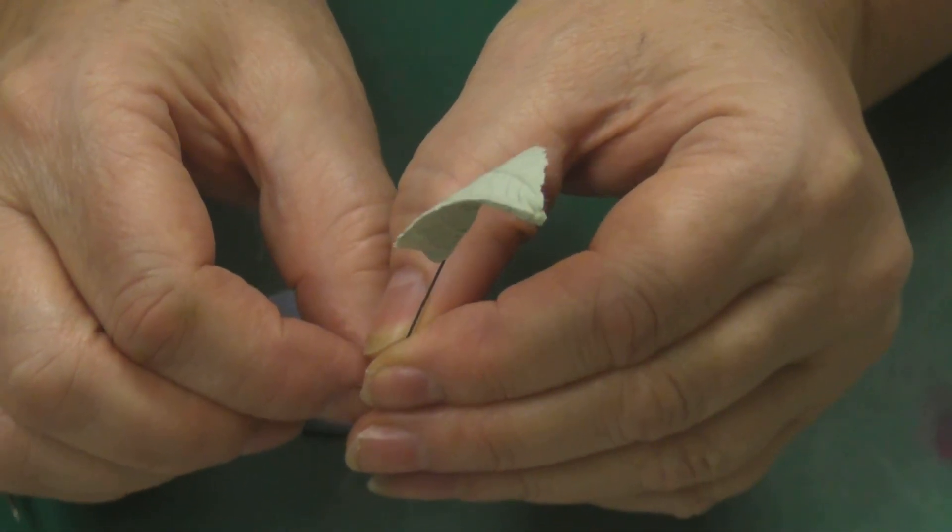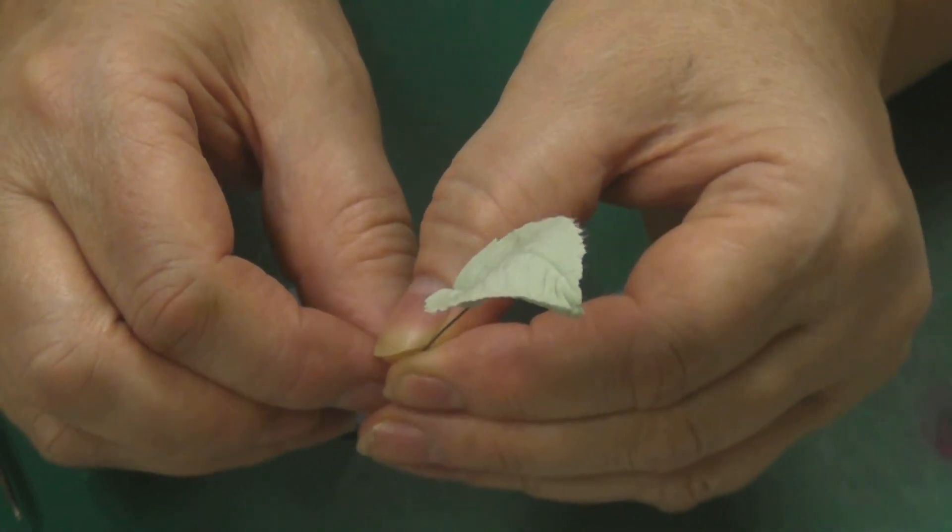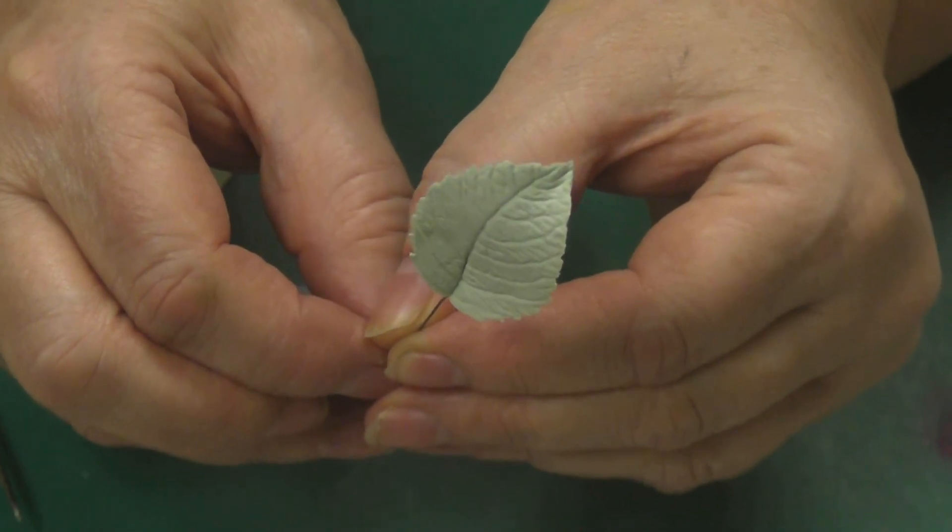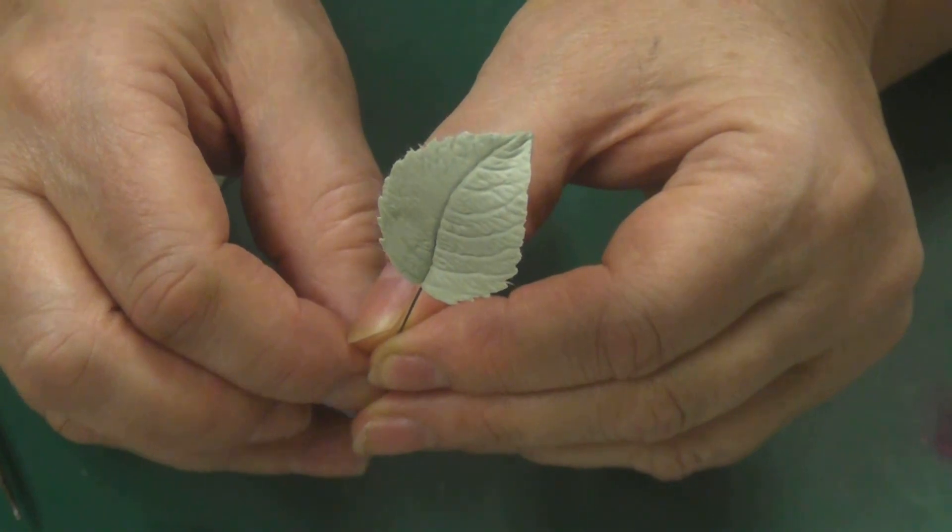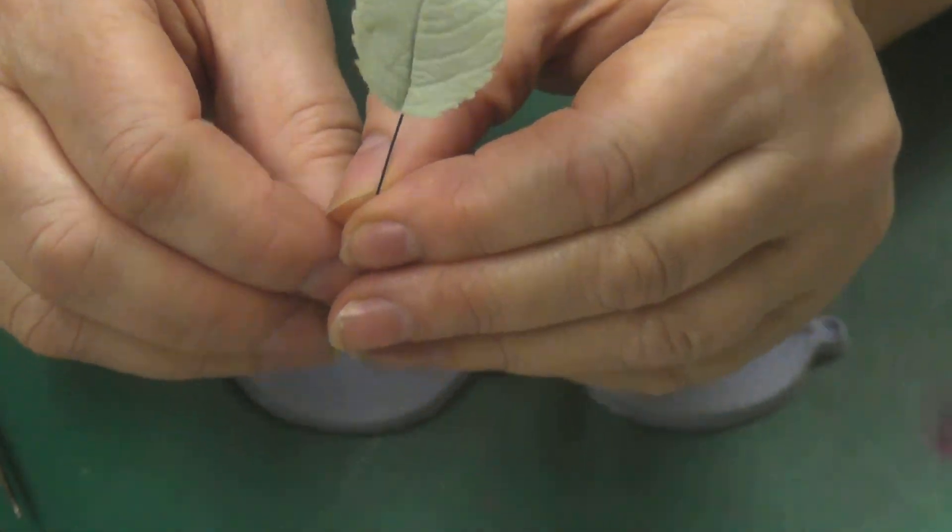So I'm going to finish off there, and then in the next installment we're going to do the coloring of this and how to wire them together, and then we'll go on to one of the different flowers. So see you later. Thank you.